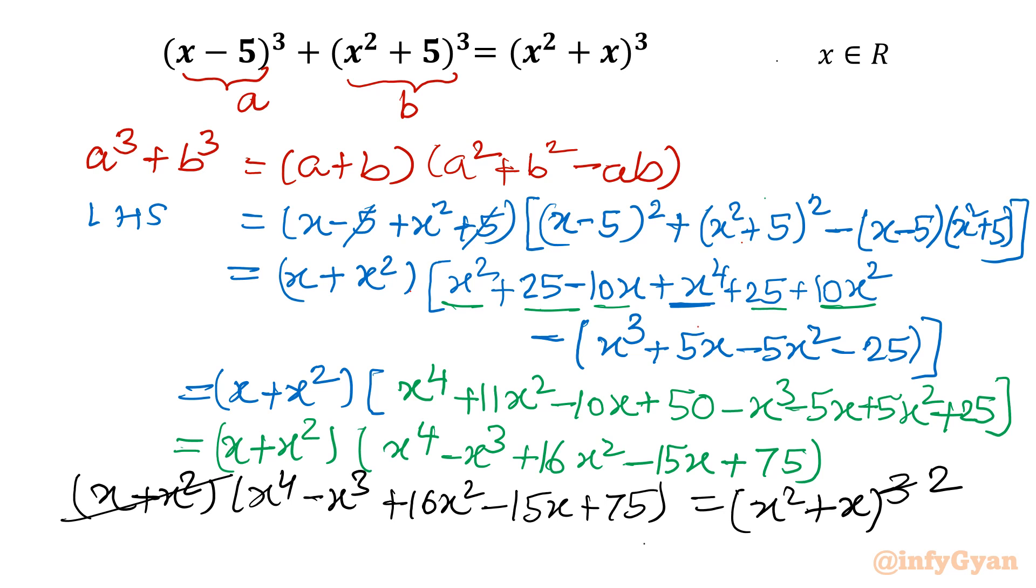Now we have to put this value equal to RHS. RHS is again whole cube. So see (x + x²) we will cancel. Now once we are canceling it, so that is our solution. So what I will write here: x² + x = 0 is our solution. Or if you will take x common, then x(x+1) = 0, which will give us x = 0 or x = -1 is our real solution. So we will accept it.